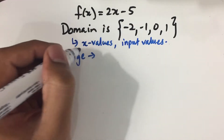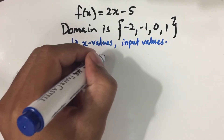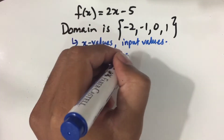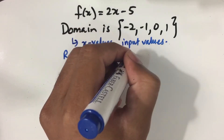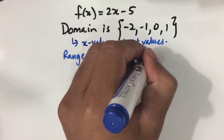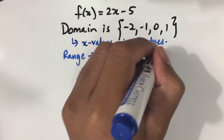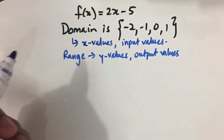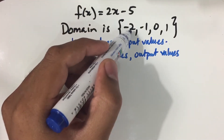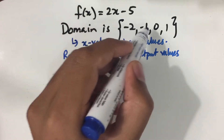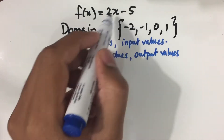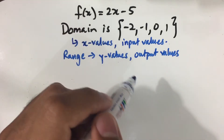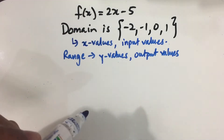What is the range? The range is just the y values of the function, and it can also be known as the output values of the function. So how do we get the output values? We use the input values -2, -1, 0, and 1, and then whatever answer we get for f(x), that would be our output values.